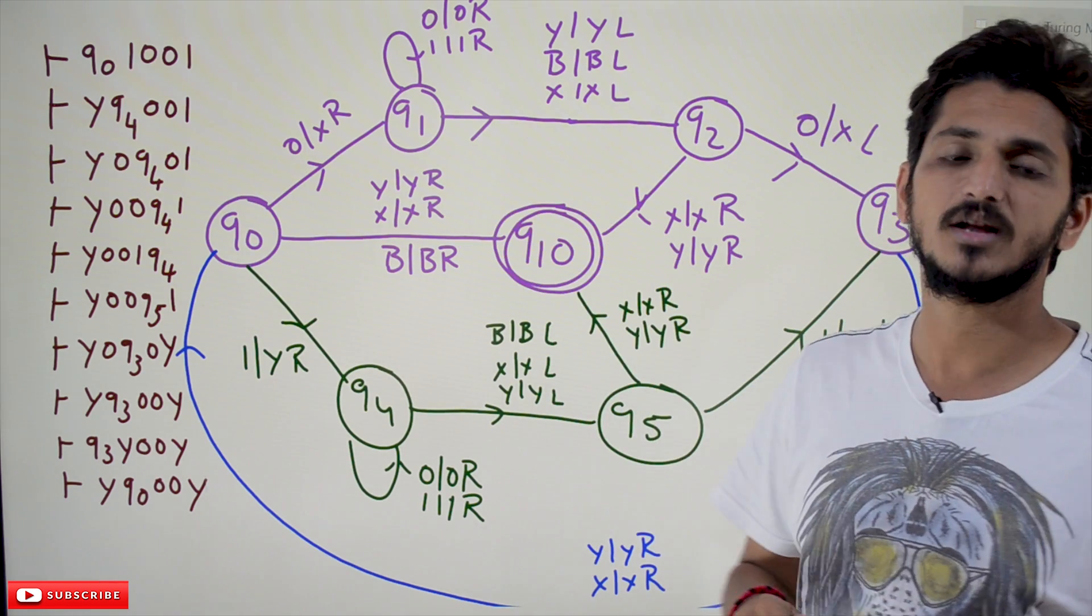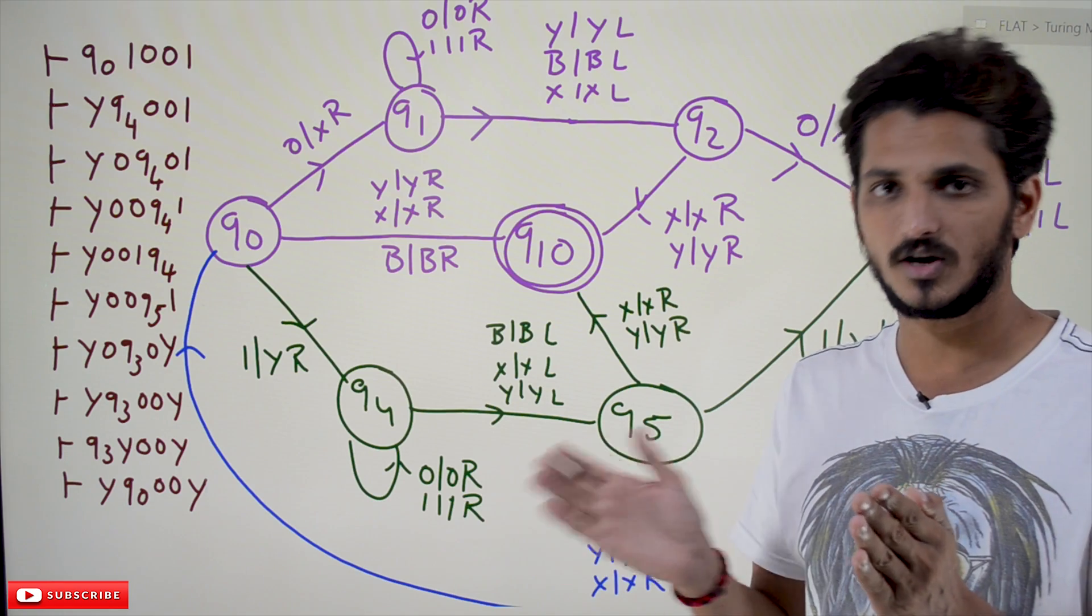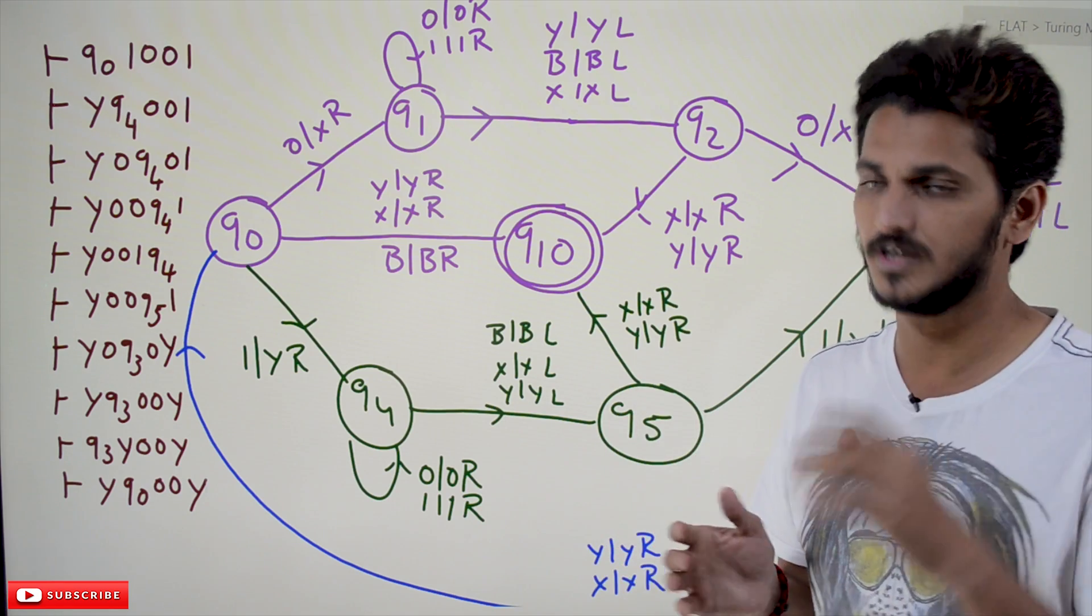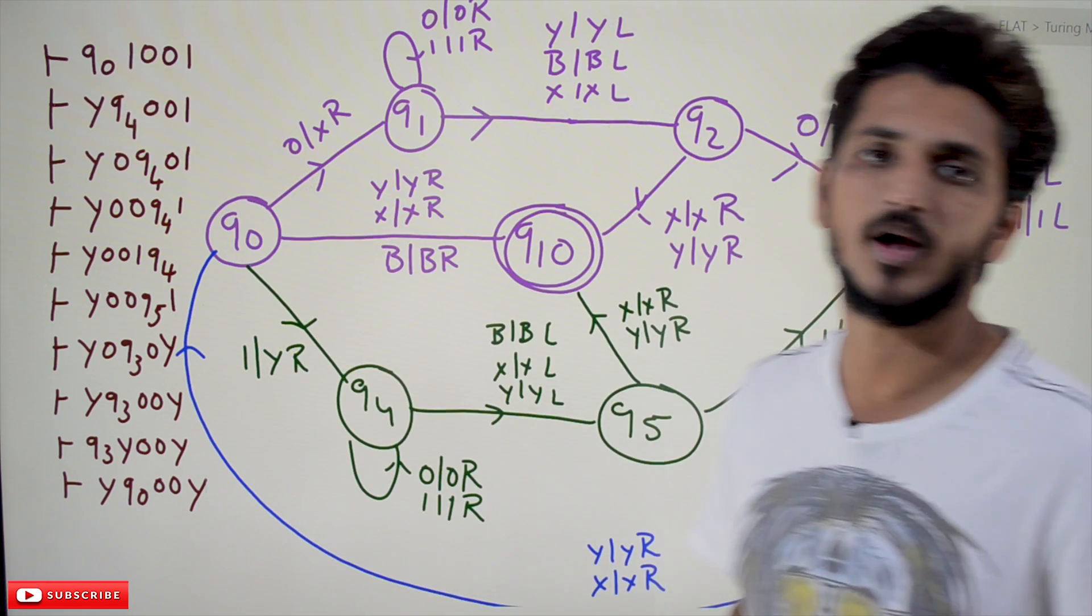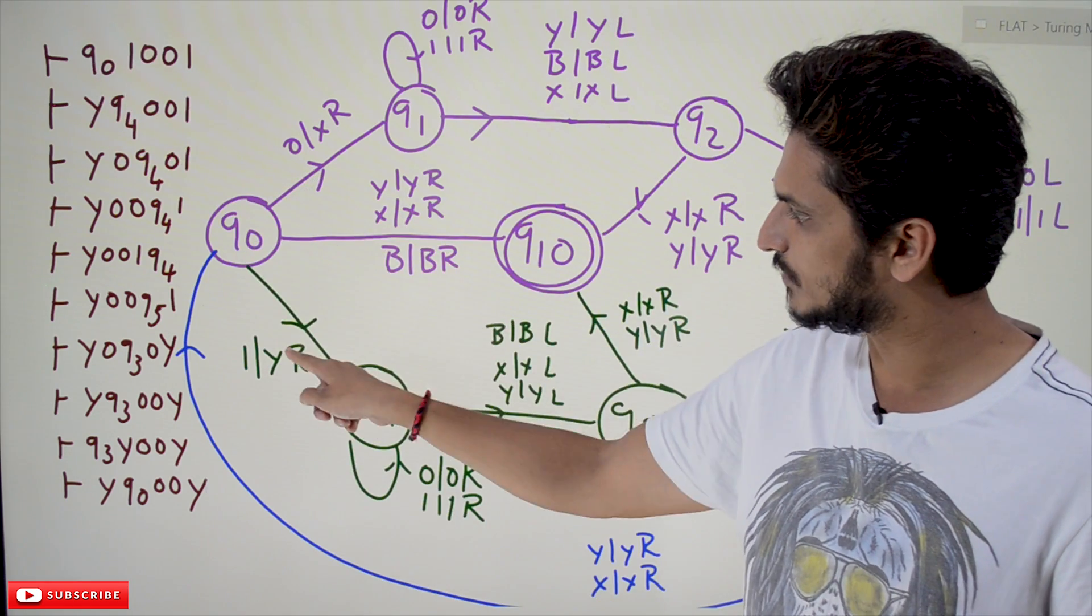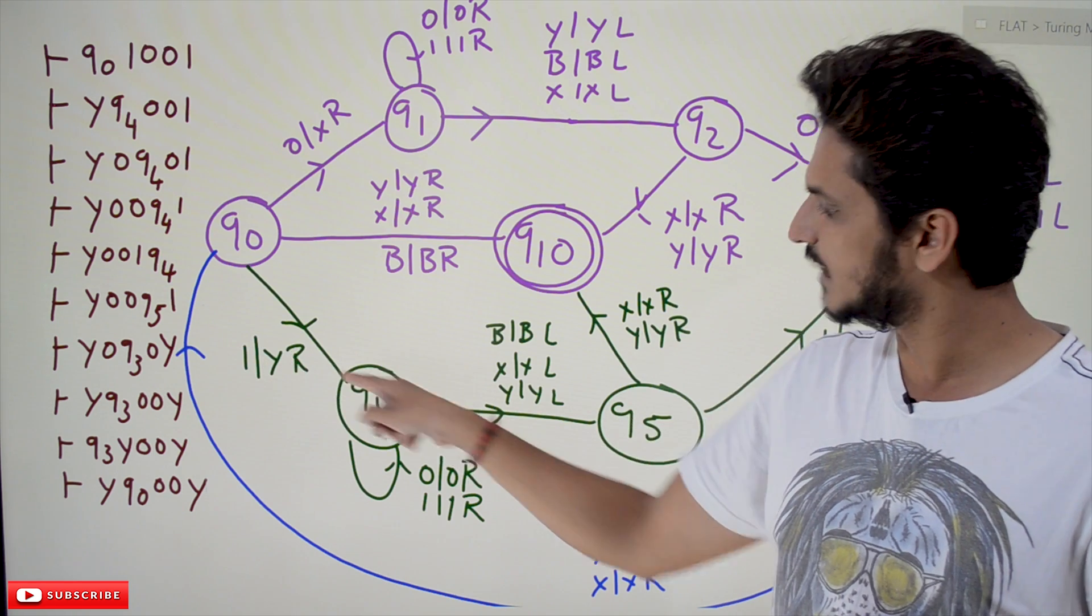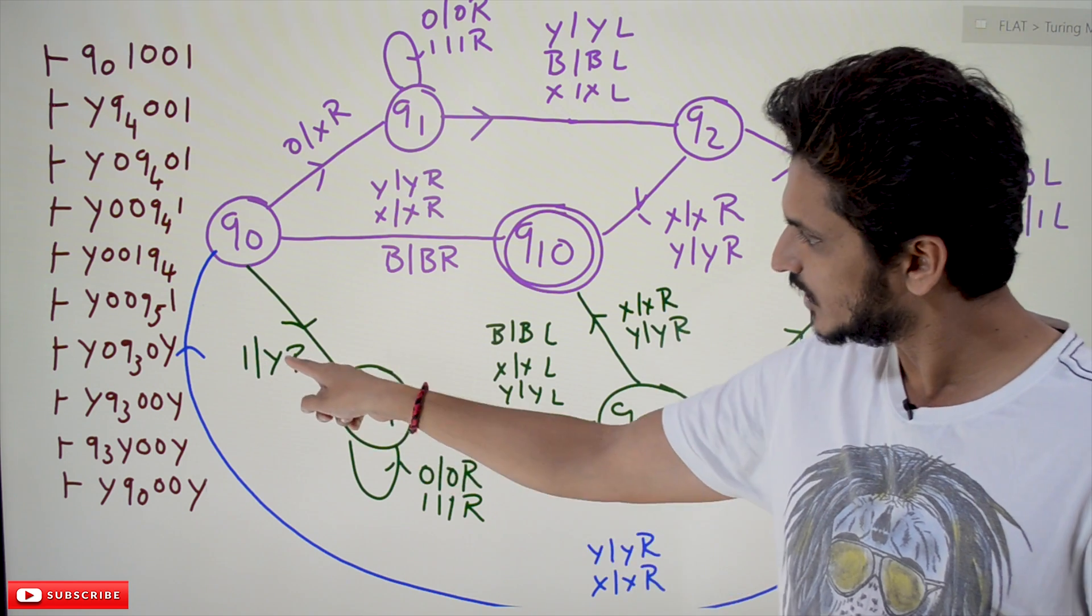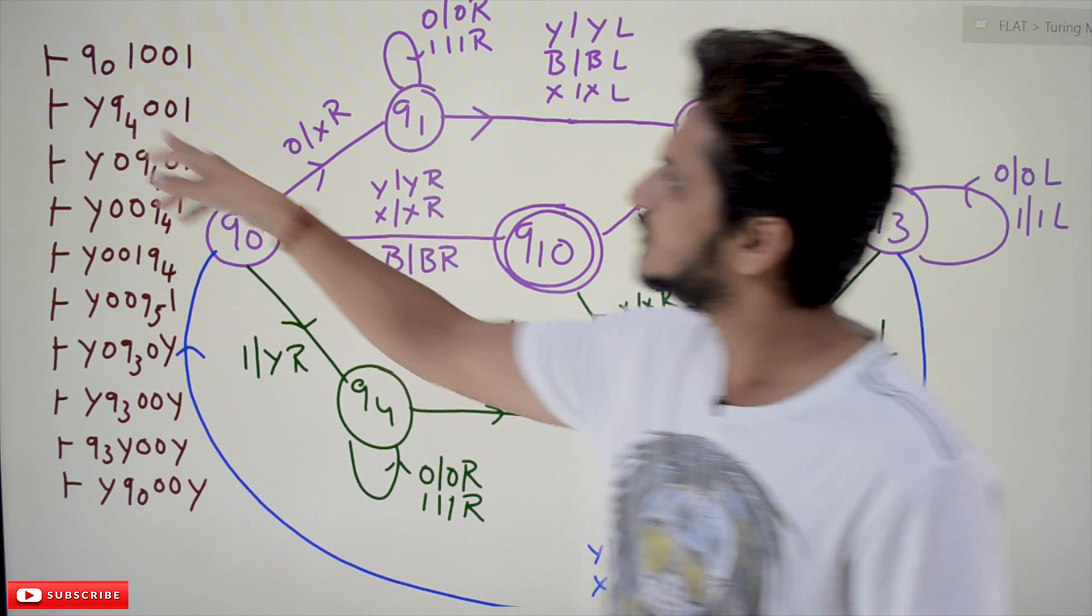Here in the instantaneous description, we are not going to show the blank symbols. Before and after there are blank symbols, but it is not mentioned. So Q0 first applied on input 1. On input 1 we will convert it into Y and move to Q4 state and we are moving one step right side of the input.